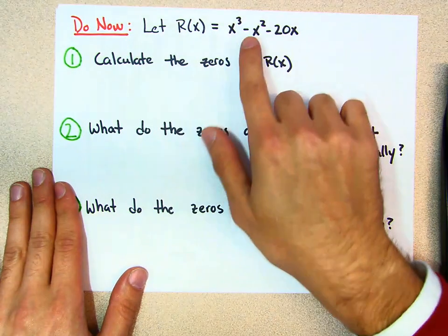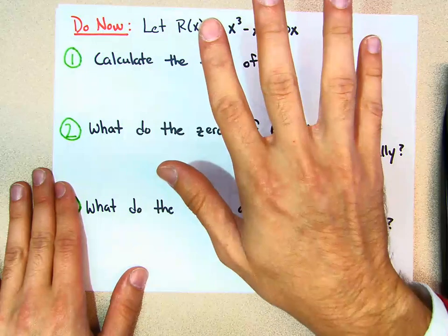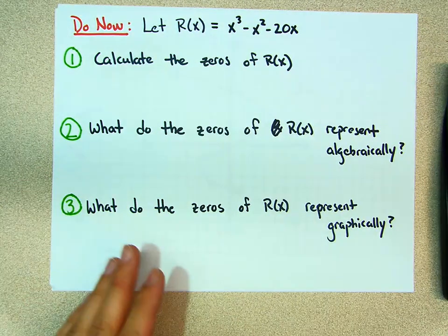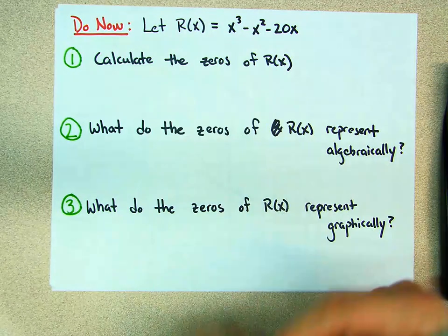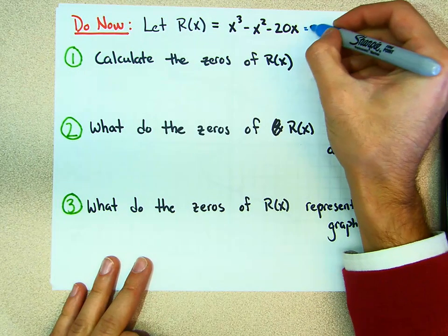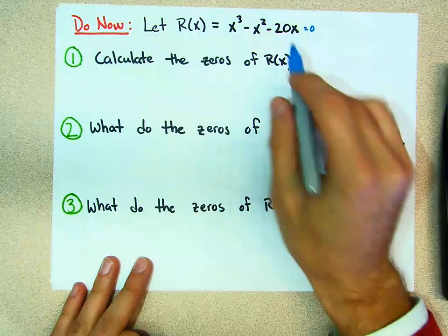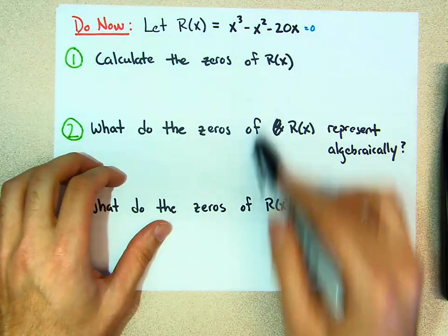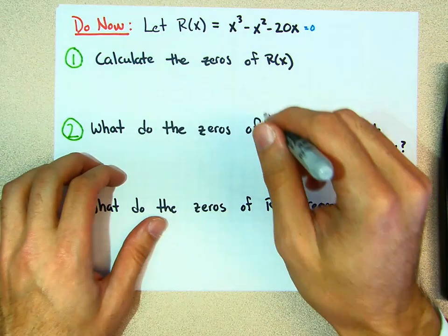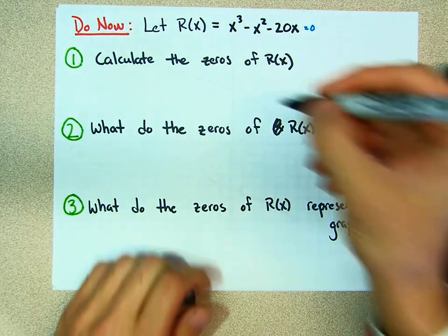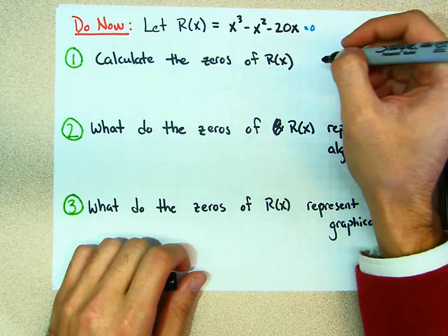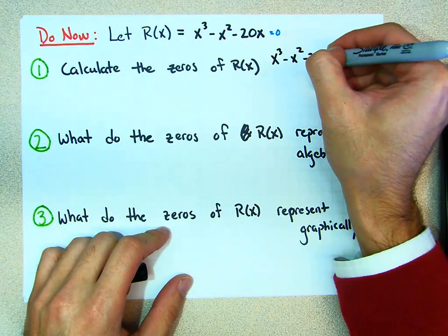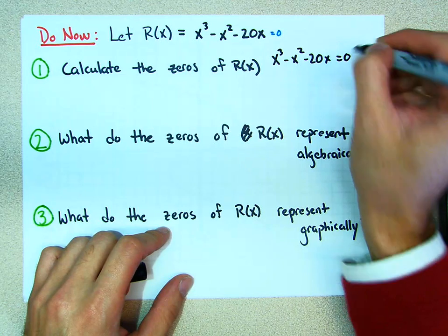As a do now, I just want you to do this the old way — whichever way we do it. How do we calculate the zeros of this function? We make it equal to zero, and then we factor it. So let's write it down. Try and do it by yourself, then watch me do it if you need help. Here is the solution: x cubed minus x squared minus 20x equals zero.